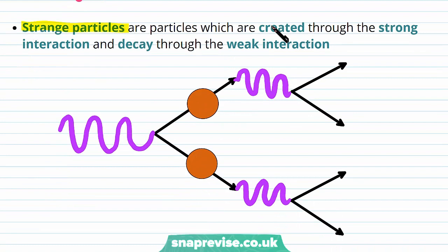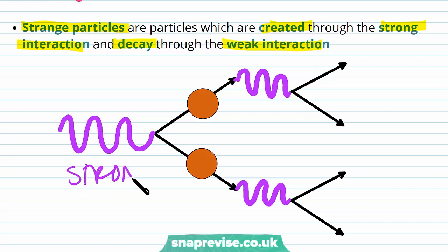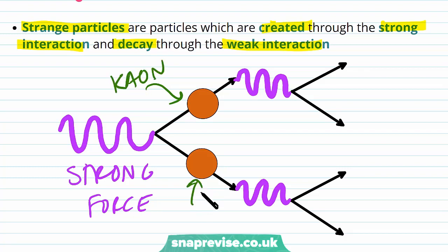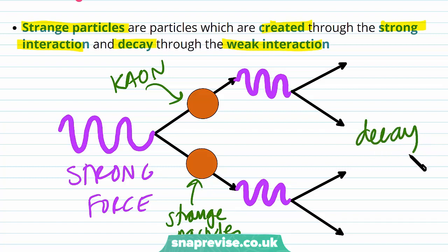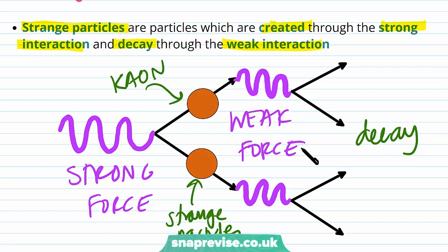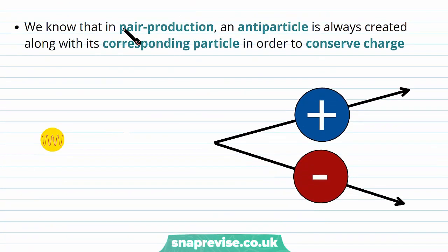Strange particles are particles which are created through the strong interaction and decay through the weak interaction. So the strong force is responsible for creating kaons and other strange particles, and then those strange particles decay via the weak force.